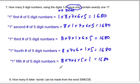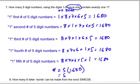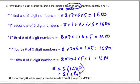So the total number of five-digit numbers is five times 1680. You could also express this as five — because there are five ways to arrange the number 1 — times the permutation of eight choose four, since there are eight remaining numbers and we pick four where order matters.